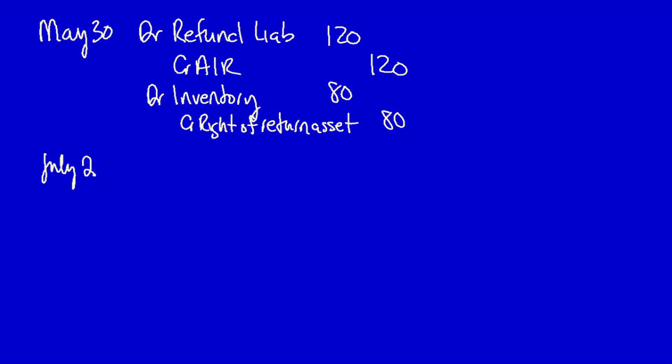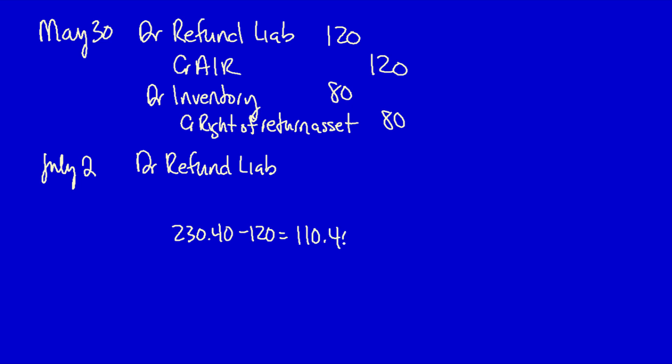Fast forward to July 2nd — the end of the 90-day right of return policy. BJB can no longer return any further product to Green Ink, so Green Ink can recognize the remainder of the refund liability account as sales revenue. The refund liability balance: two hundred and thirty dollars and forty cents minus one hundred and twenty dollars equals one hundred and ten dollars and forty cents. Green Ink can now recognize sales revenue of one hundred and ten dollars and forty cents.